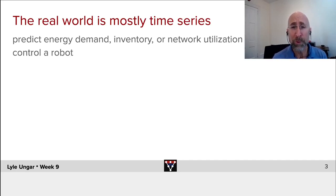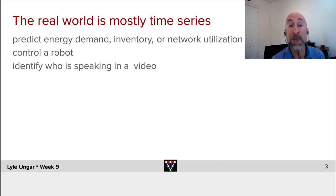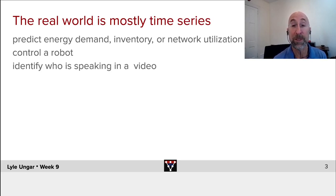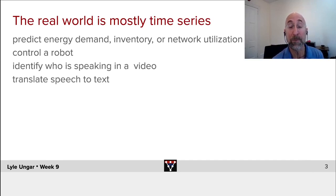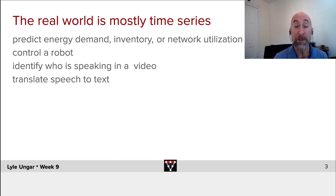Robots, drones — sequences of measurements, images, geolocations over time. We will later do reinforcement learning to control these. Videos are sequences or time series — a sequence of sounds and images. People these days try to, for example, recognize who is speaking when in a video. All the commercial speech recognition systems take in a sequence of sounds from your microphone and produce a sequence of characters, and all of them use deep learning methods that we will cover this week.